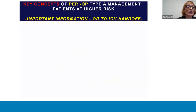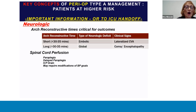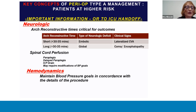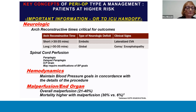Postoperatively, as the patient comes out of the operating room, the most important information to receive in handoff from the OR to the ICU again involves the three key physiologic systems. For neurologic function, the arch reconstruction times are critical to outcome, and results of neurologic monitoring in the OR are also important to know in handoff. It's critical to know if the patient had paraplegia preoperatively, if the patient has an ICP drain in place, and to monitor the patient for delayed paraplegia, which may require modifications of blood pressure goals and placement of an ICP drain in the ICU. From a hemodynamic standpoint, it's important to keep blood pressure parameters in concordance with the procedure performed and the surgeon's goals. Dissection can have a static or dynamic dissection flap and can cause malperfusion in one or more physiologic organ systems.